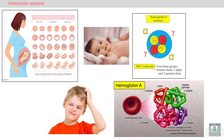Hemolytic anemia due to globin chain gene defects. During pregnancy, the fetus has embryonic hemoglobin. After delivery, the baby has hemoglobin F, which is composed of two alpha and two gamma chains. After six months, hemoglobin F disappears and hemoglobin A appears, which is also composed of two alpha chains.